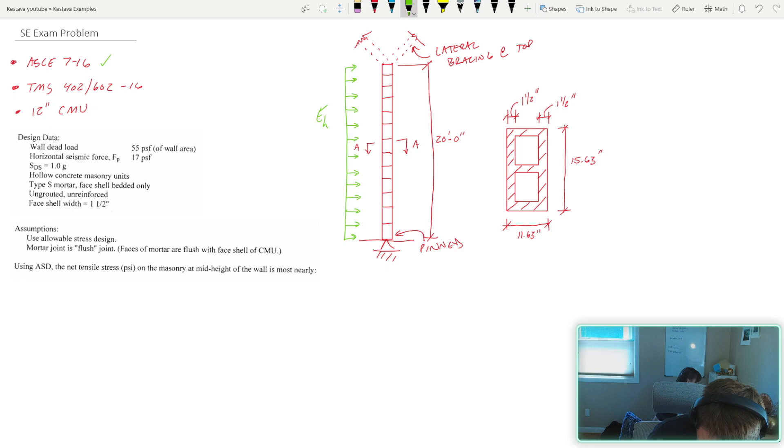We're using the ASCE 7-16. I know that's going to switch here in the coming year or the next little bit, so make sure you're paying attention to code changes. We're using the TMS 402-602 2016 edition, and we have 12-inch thick CMU wall. I got a little figure over here.